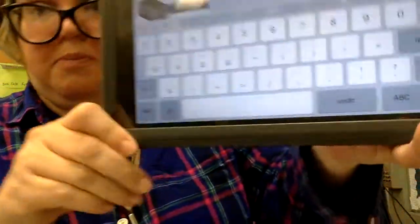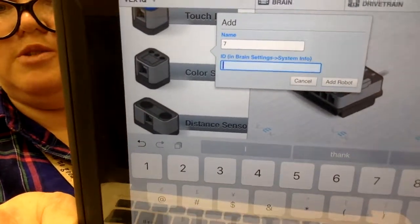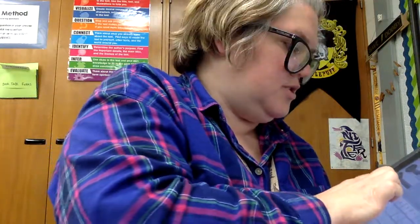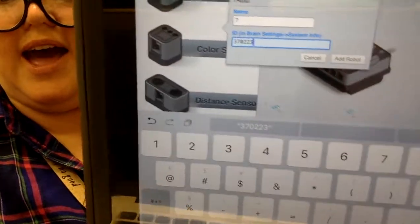So you can give your robot a name. I'm going to name my robot 7 because it's number 7. And then you put the ID number into that box there. So this is 370223. And once you've done that you click add robot.